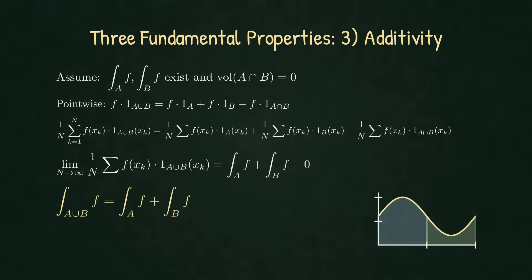Additivity on domains follows from a single identity with indicators. Along any uniform sequence, averages respect that equality term by term. If the intersection between the set A and B is negligible, the last piece vanishes and we get this equality.